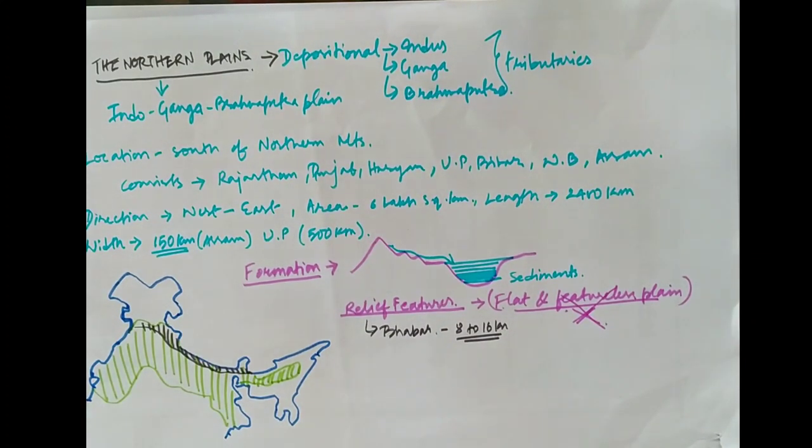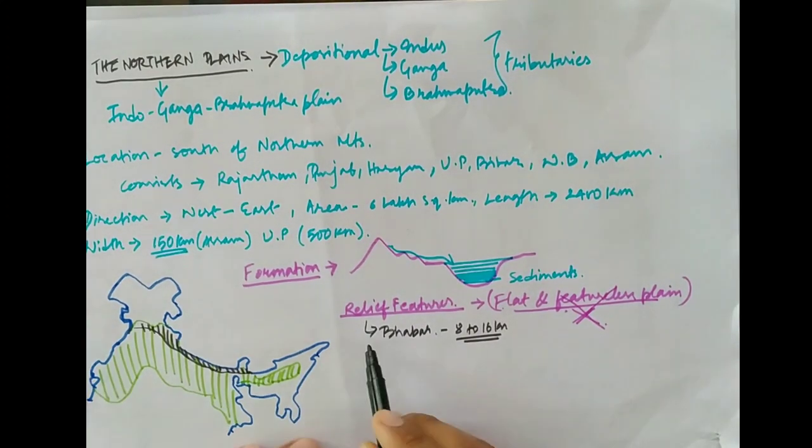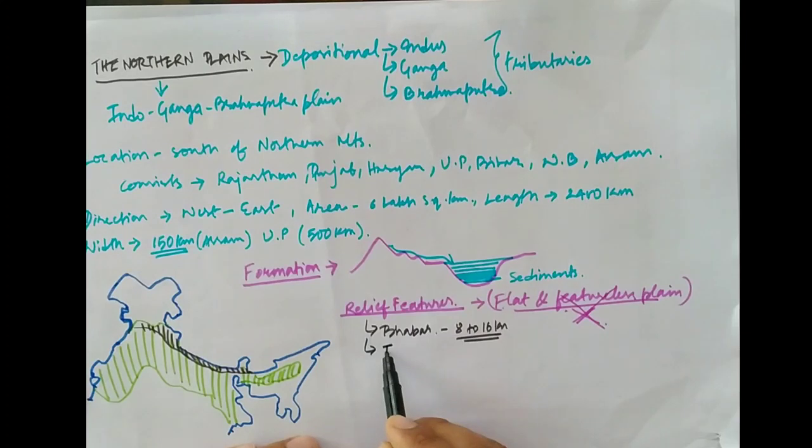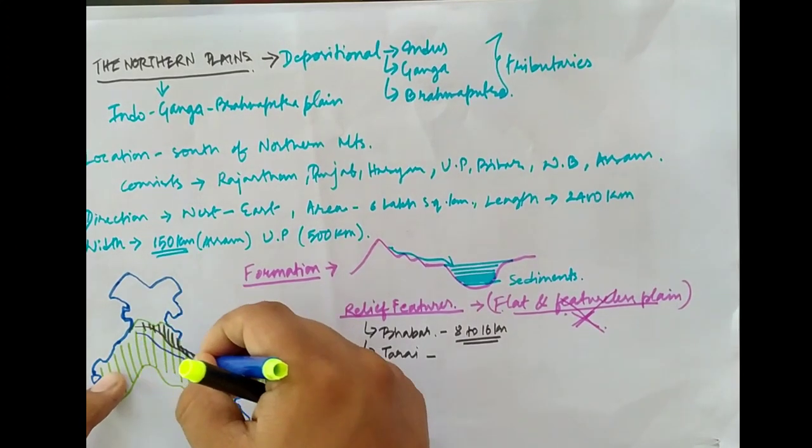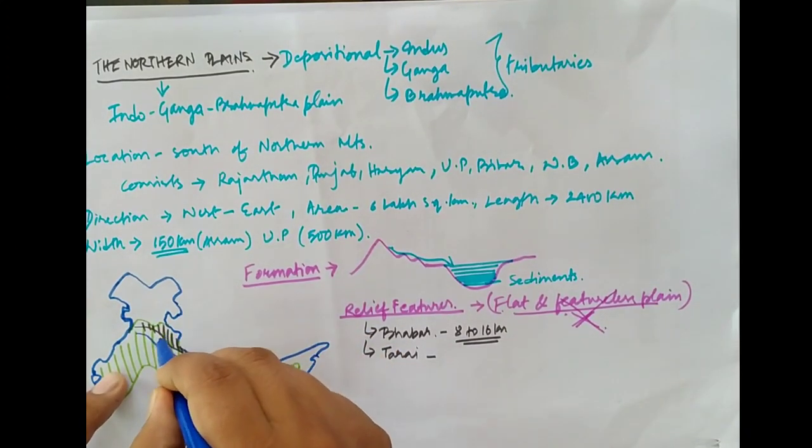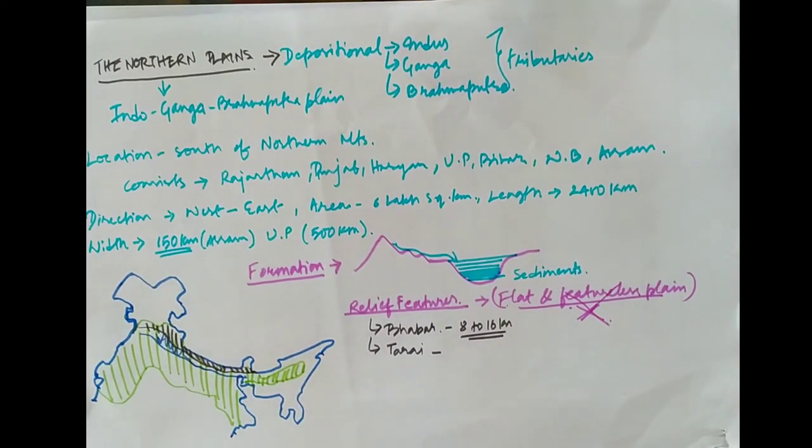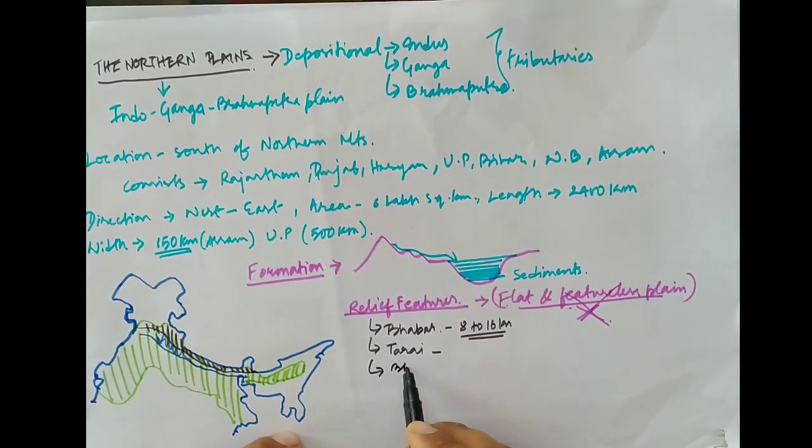Towards the south of Bhabar lies the Tarai region. One striking feature of the Tarai region is the re-emergence of streams which disappear in the Bhabar area. It lies to the south of Bhabar.